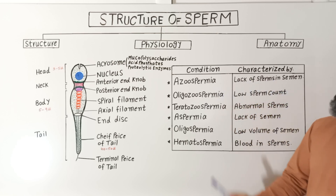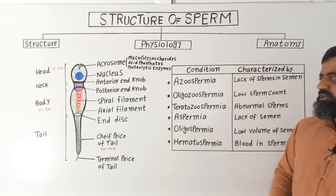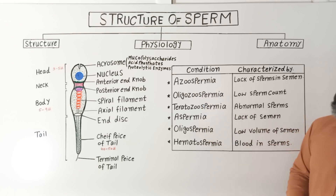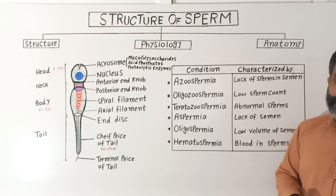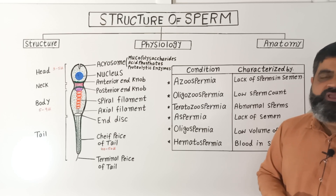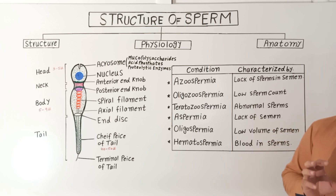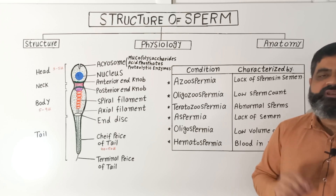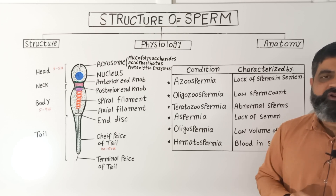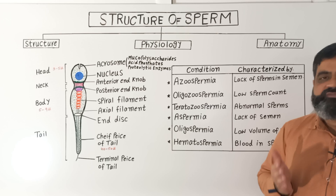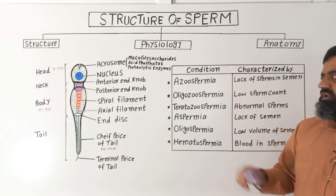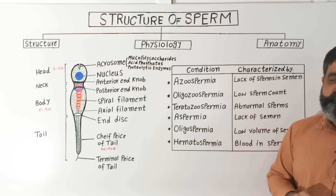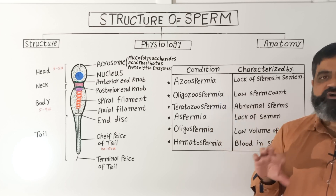The second condition is known as oligozoospermia, in which there is a low sperm count in the semen. As you know, there should be at least 20 million sperms in one milliliter of semen. If the sperm count is less than that, the condition is known as oligozoospermia, which can also lead to infertility.